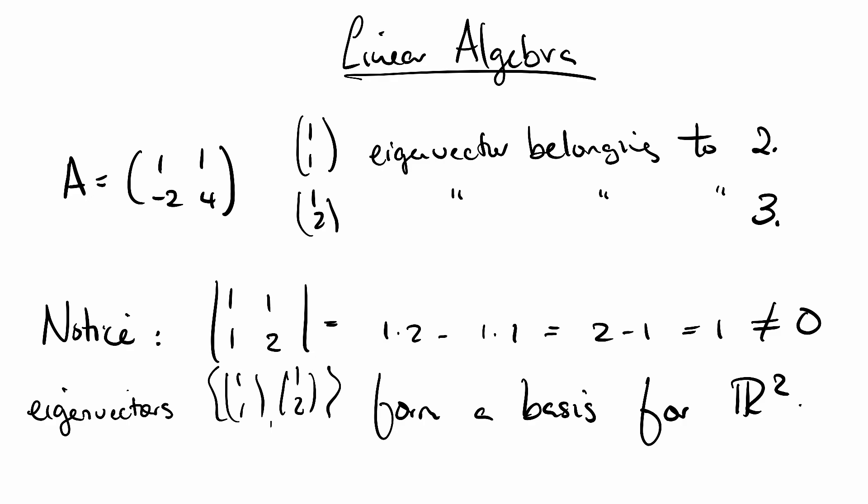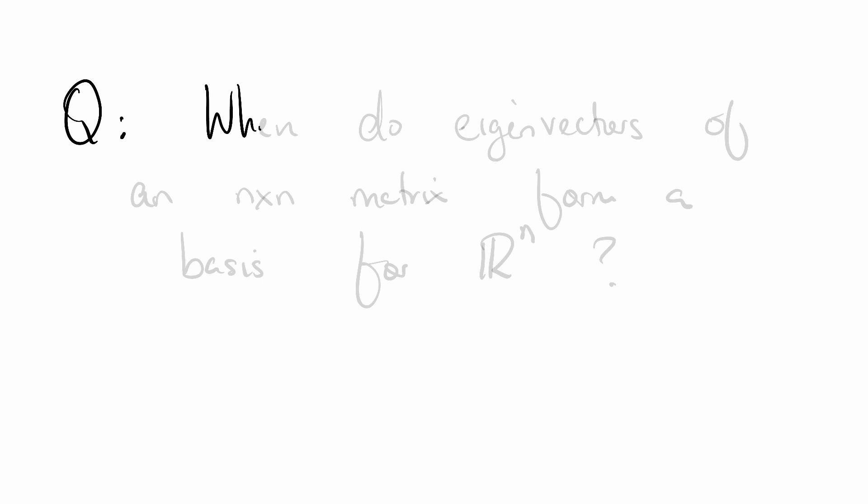You might ask yourself, does this always happen? Here's the question: when do the eigenvectors of an n by n matrix form a basis for Rⁿ? By the end of this lesson, hopefully we'll have at least a partial answer.